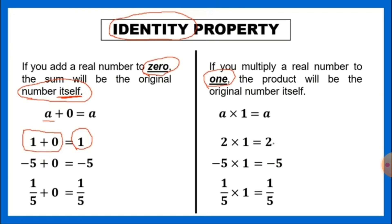So this is the concept of identity property of multiplication — any integer multiplied by 1 remains the same number. For addition, 0 is the additive identity; when you add 0 to any number, it will always remain the same number.